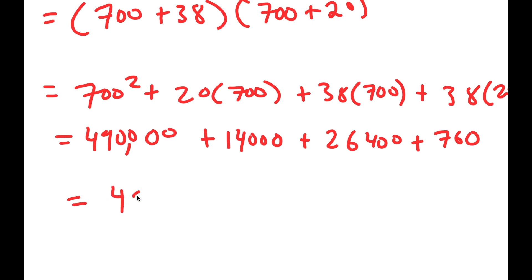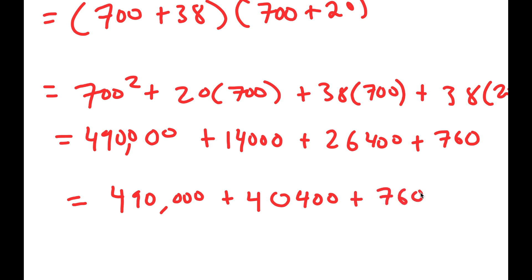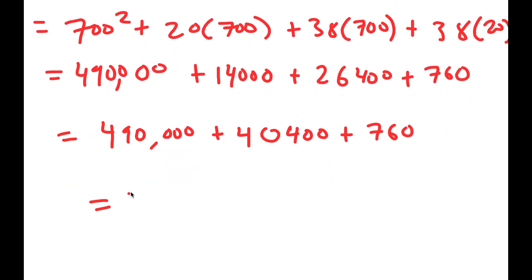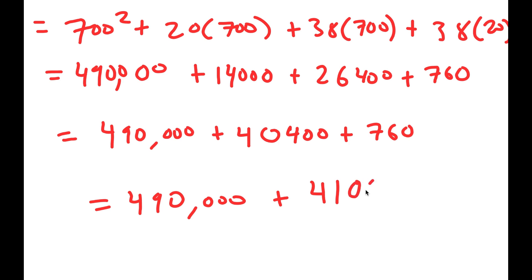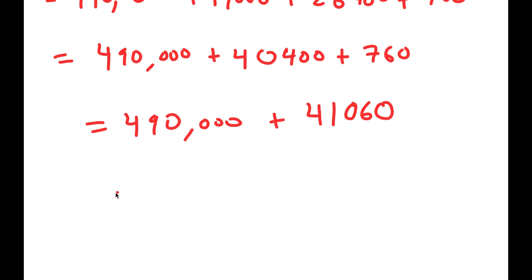This is equal to 490,000 plus 40,400 plus 760, which is equal to 490,000 plus 41,160, which is equal to 531,060.